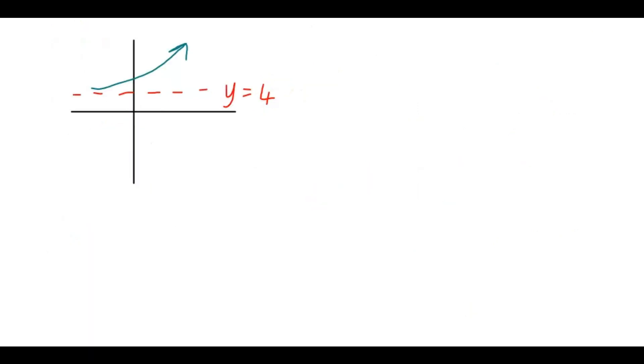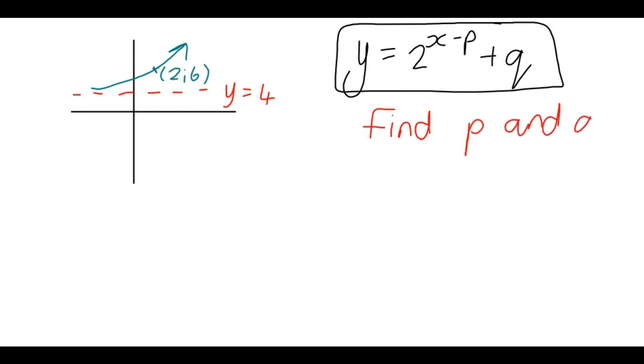They give us another point here. They say, at this point, we're going to have the value 2, 6 at that point. And they also say, you are given a little help. y equals 2 to the power x minus p plus q will be the equation for this function. So what you need to find is p and q. Okay, so they help you a little.